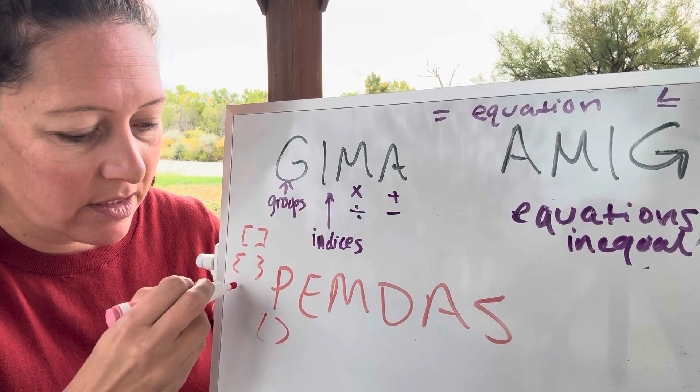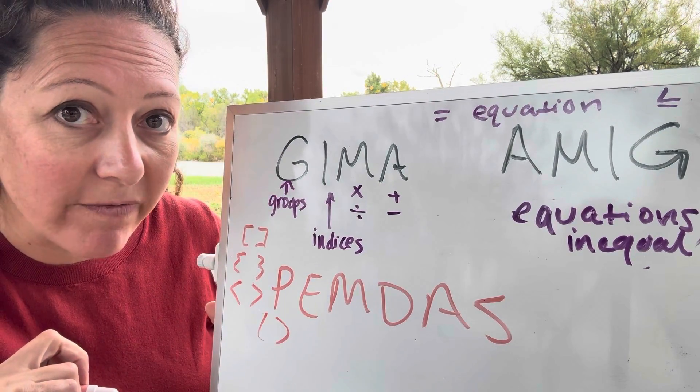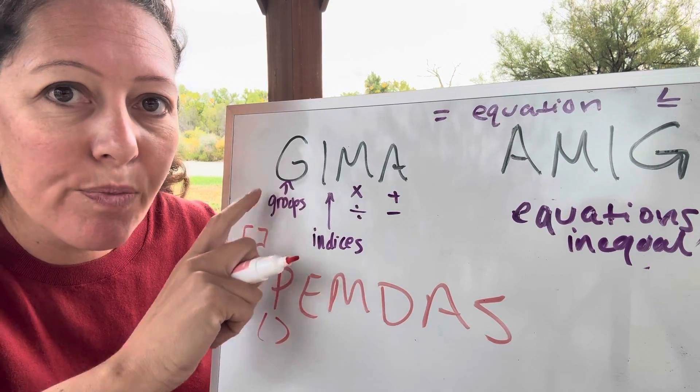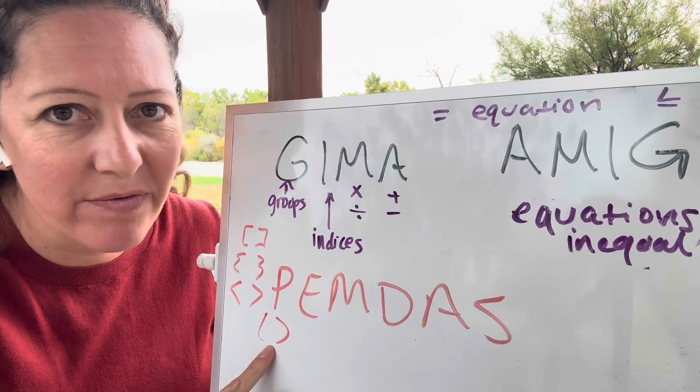We could have braces. We could have angle brackets with vectors. So we can have other things that are grouping stuff together and outside of just having a parentheses.